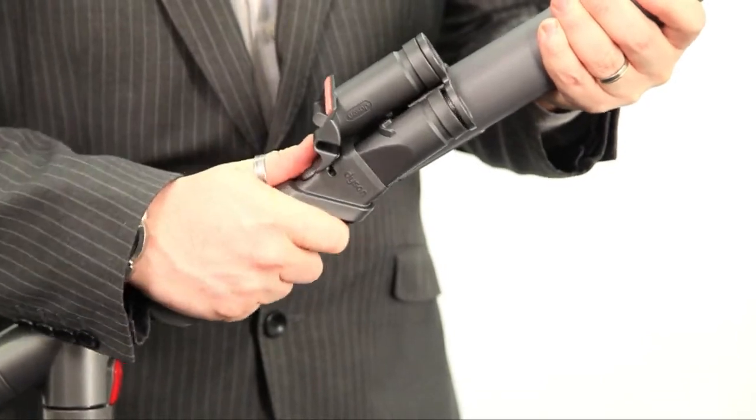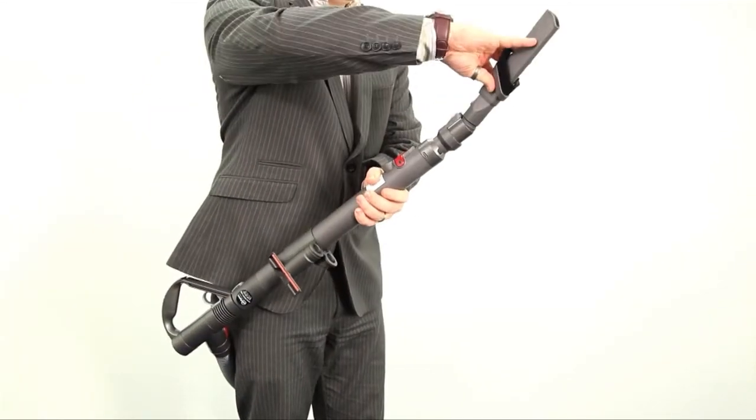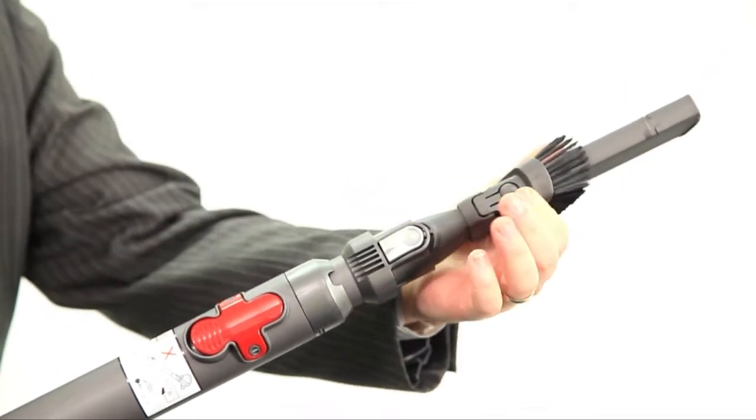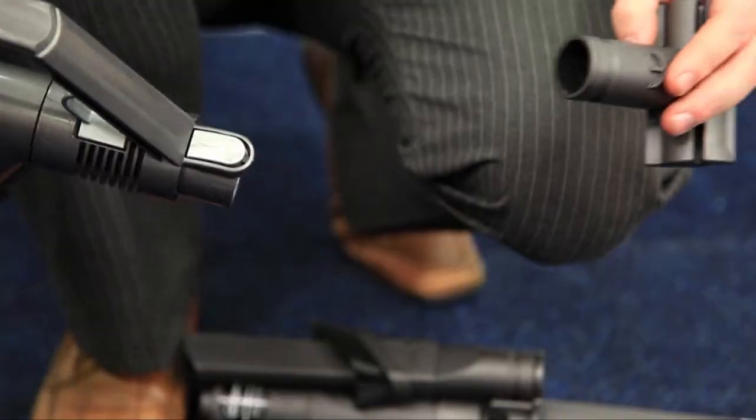The accessories are stored on the wand so that they can easily be located when needed. All the accessories can be attached to the bottom of the wand or the hose to use on the stairs.